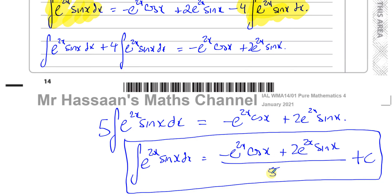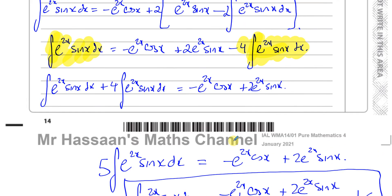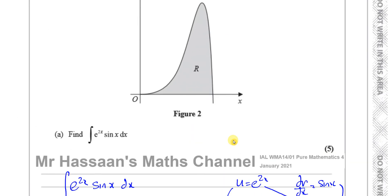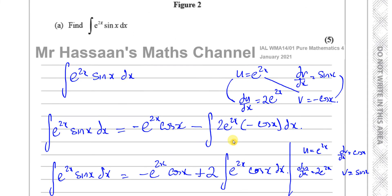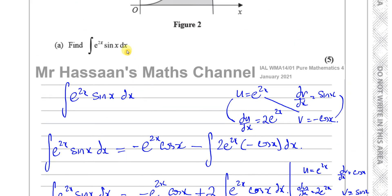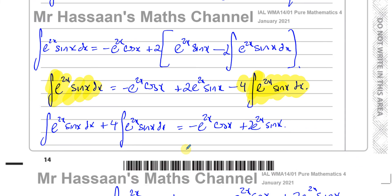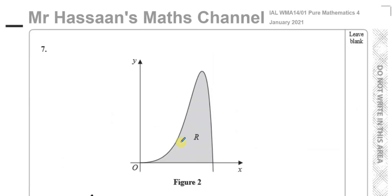That's the technique. It first appeared in the specimen paper for P4 — that was the first time I saw this type of question. It's a new style where you think you're going to go on forever, but when you get to that stage, you notice the two integrals are like terms, bring them together, and you're left with exactly the integral you had to find. Then just divide both sides by 5. It's a very important technique to know and practice.